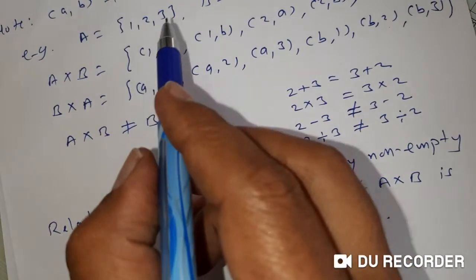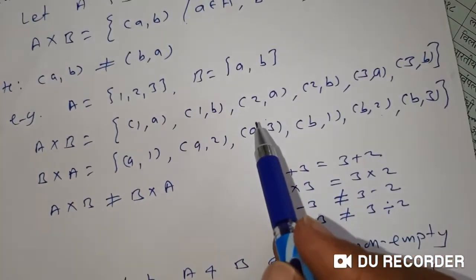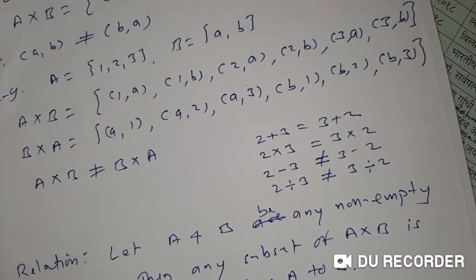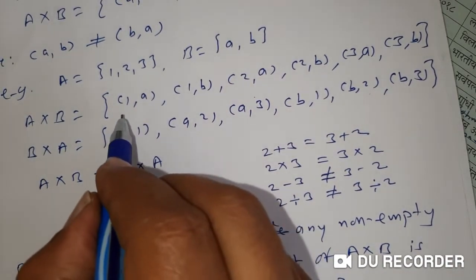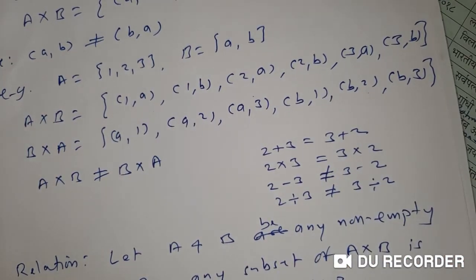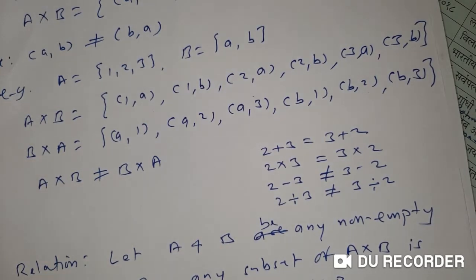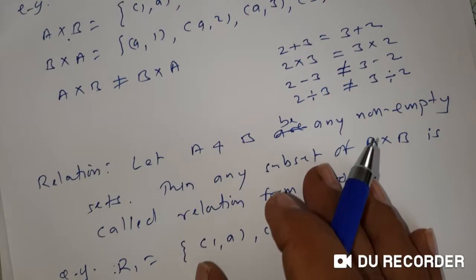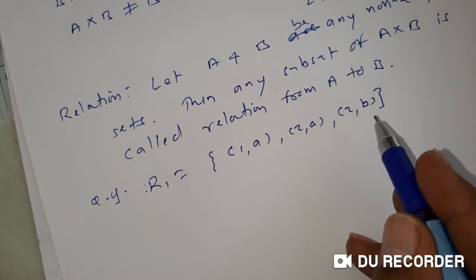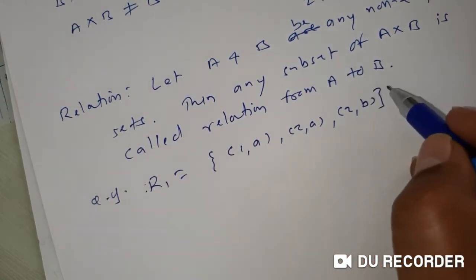For example, in the above example A is {1, 2, 3} and B is {a, b}, so A cross B contains six elements. A relation from A to B is any subset of these six elements — for example, R1 = {(1,a), (2,a), (2,b)}. This R1 is a subset of A cross B and so it is one of the relations from A to B.